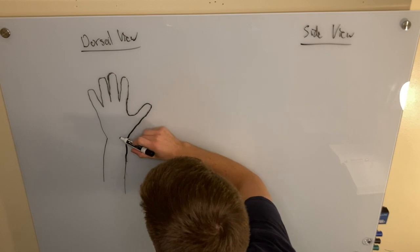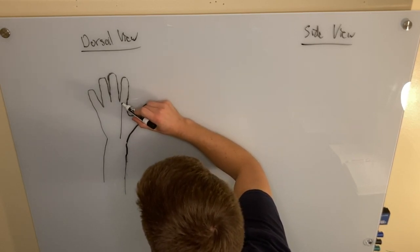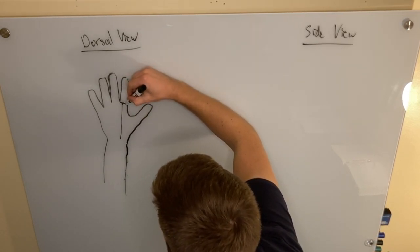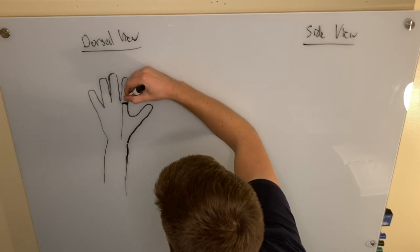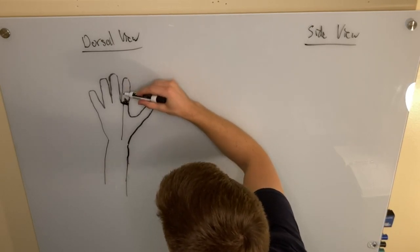So first we're going to draw extensor digitorum tendon inserting onto these transverse fibers of the dorsal hood. And that also has oblique fibers.